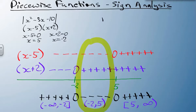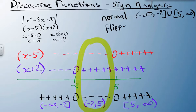So I have the normal, and that runs from negative infinity to negative 2, union from 5 to infinity. The flipped part, that is in between negative 2 and 5. So we're going to use this on the next screen to write out our piecewise function.